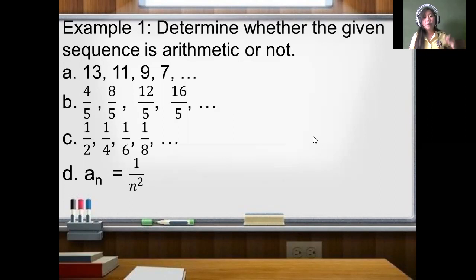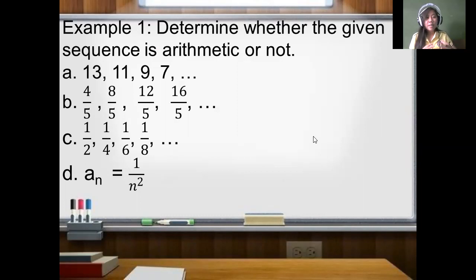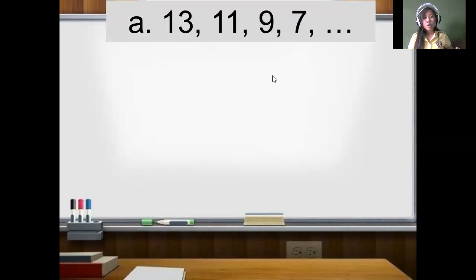What do you think is the common difference? In finding the common difference, we need to subtract the second term from the first term. We always look for the difference, so we use subtraction. So 13 is our A sub 1, 11 is A sub 2, 9 is A sub 3, and 7 is A sub 4. We are determining whether the sequence is arithmetic or not.